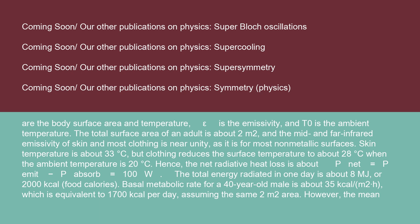The total surface area of an adult is about 2 square meters, and the mid and far infrared emissivity of skin and most clothing is near unity, as it is for most non-metallic surfaces. Skin temperature is about 33°C, but clothing reduces the surface temperature to about 28°C when the ambient temperature is 20°C. Hence, the net radiative heat loss is about P_net = P_emit − P_absorb ≈ 100 W. The total energy radiated in one day is about 8 MJ, or 2,000 kilocalories (food calories).